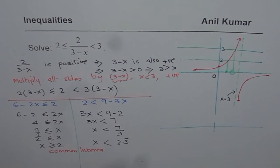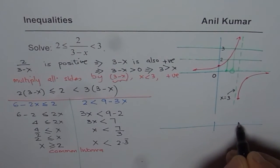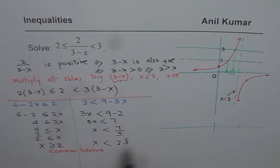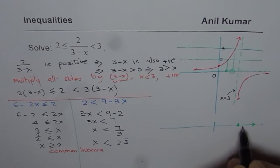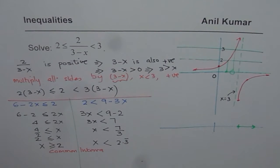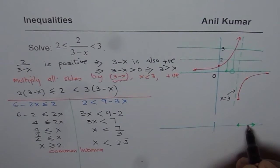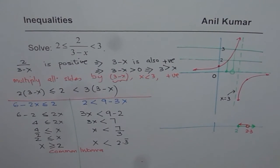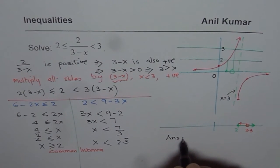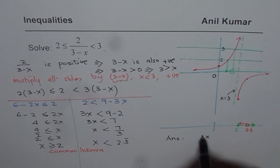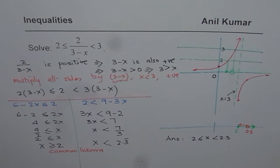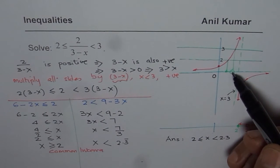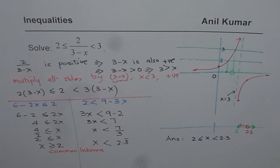The common interval is x ≥ 2 and x < 2.33. On the number line, 2 is included (closed) and 2.33 is not included (open). So the final solution is 2 ≤ x < 7/3, which is the interval [2, 7/3). This is the method to solve such a rational inequality.